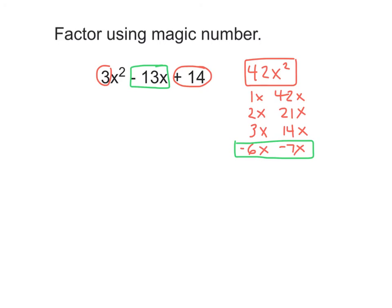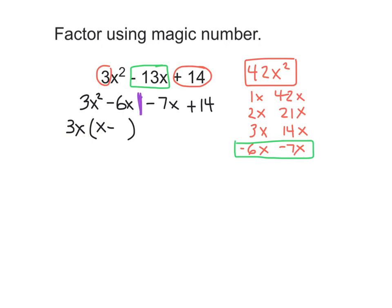Do you remember what to do next? We're going to write our first term, 3x squared, and our last term, plus 14, leaving a bunch of space in the middle. Now we are going to separate that negative 13x into minus 6x minus 7x. We put in that vertical line. On the left side of the vertical line, 3 is a common factor and an x, so we factor out 3x. We're left with: 3x squared divided by 3x gives x, and 6x divided by 3x leaves 2. So 3x times (x minus 2).